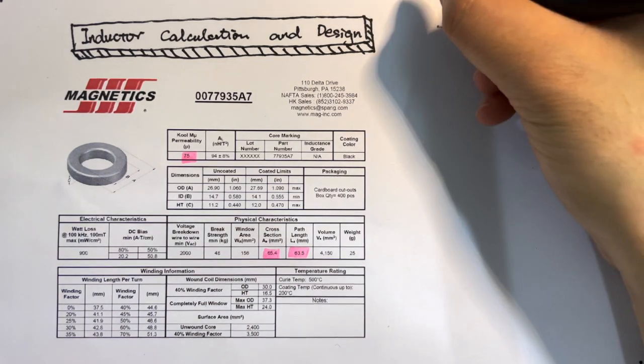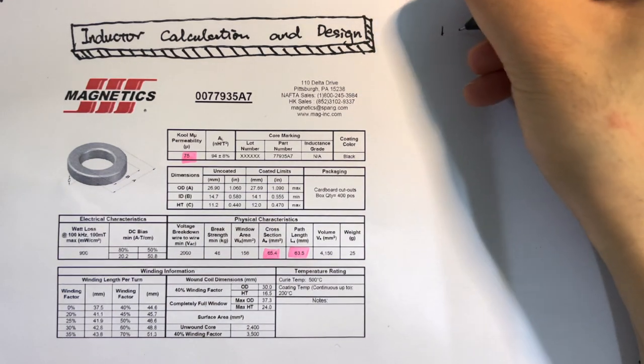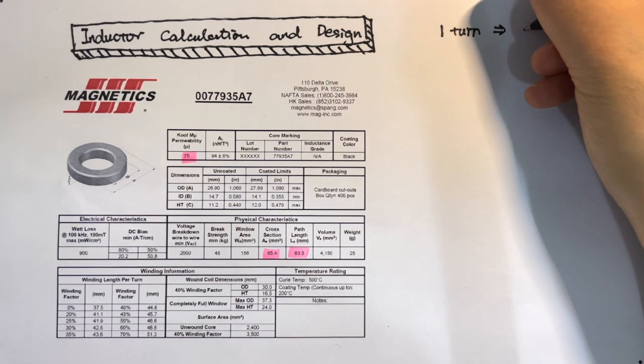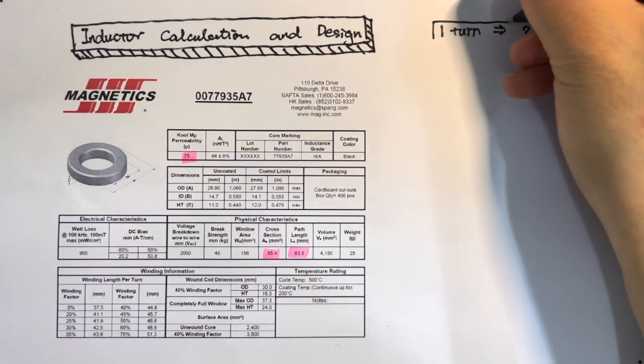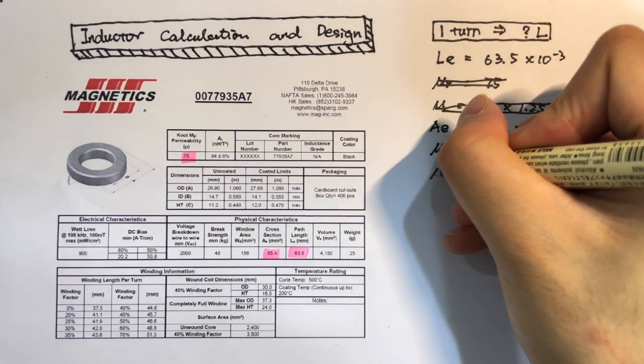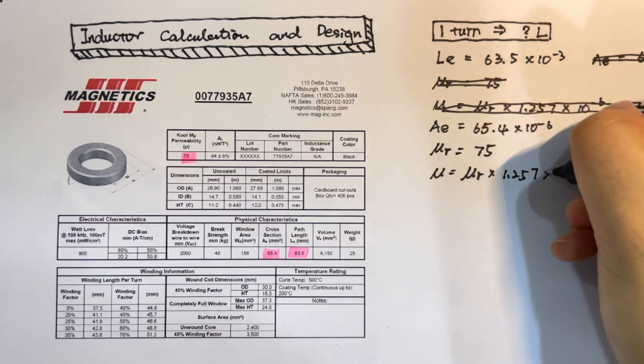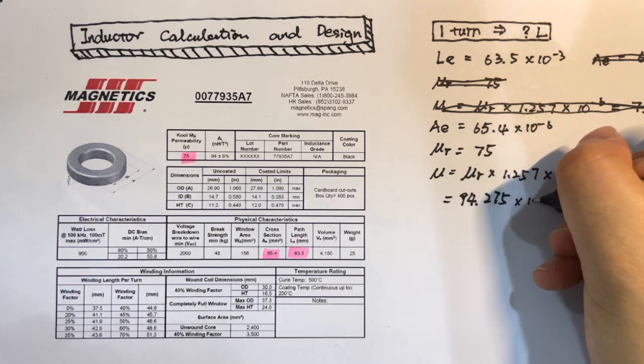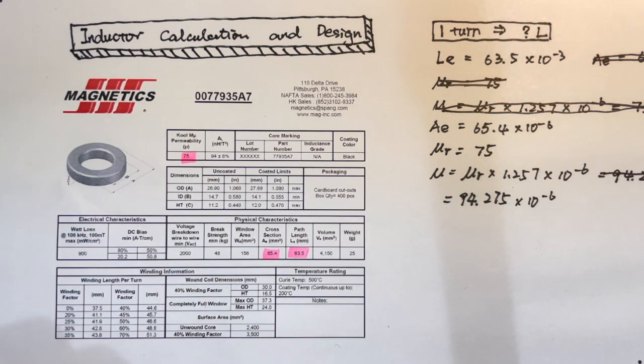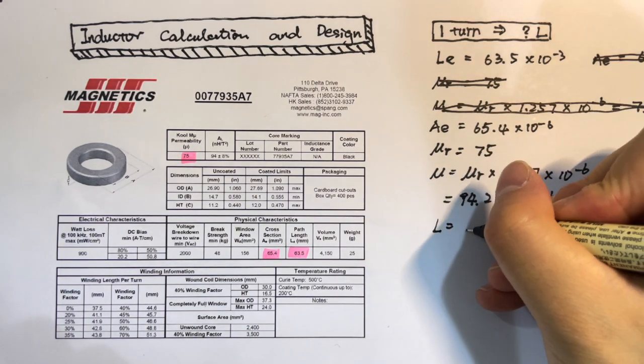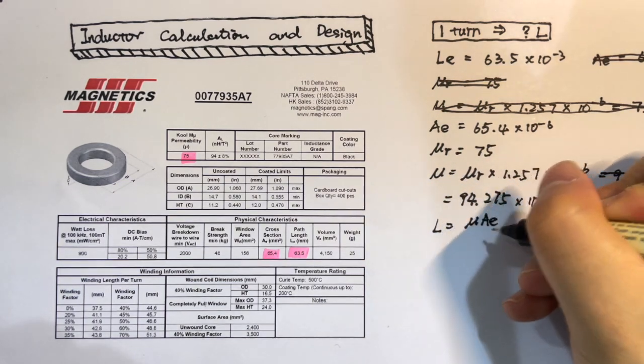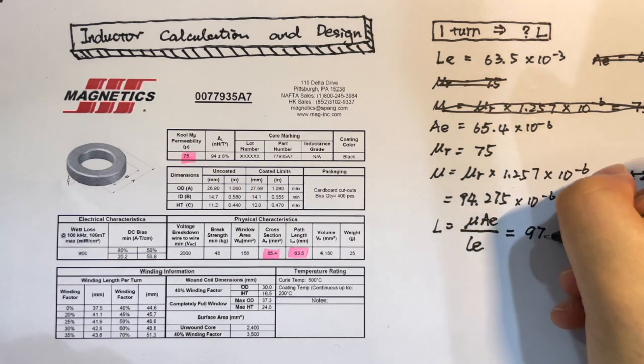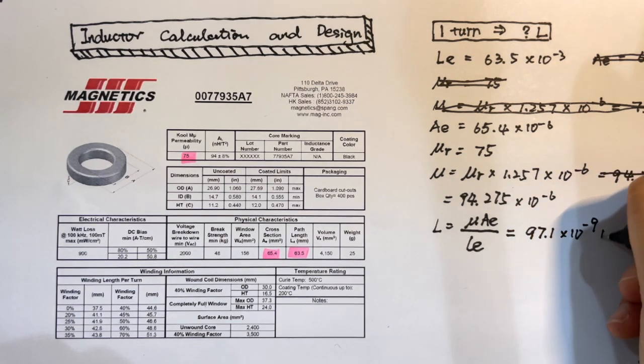If we want to know how many turns winding we need for a 100 microhenry inductor, we need to calculate how much inductance one turn can give. We first calculate the permeability by time 1.257 times 10 to the power of minus 6 to the relative permeability. And then we use L equals to mu AE divided on LE to get one turn of winding can give us 97.1 nanohenry.